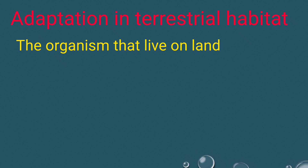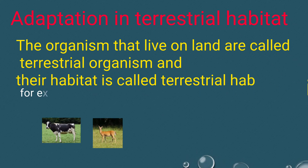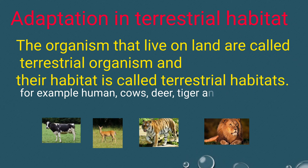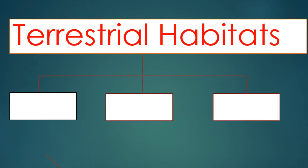The organisms that live on land are called terrestrial organisms and their habitat is called terrestrial habitat. For example, humans, cows, deer, tigers, and lions are terrestrial organisms. Terrestrial habitat is classified in three categories: desert habitat, mountain habitat, and grassland habitat.